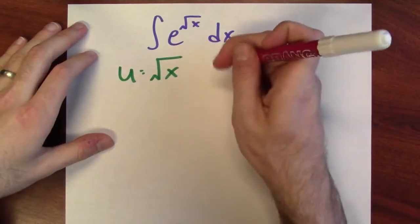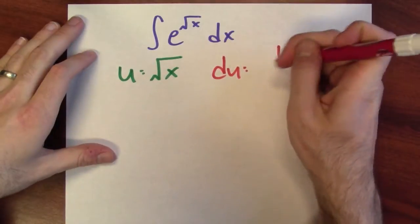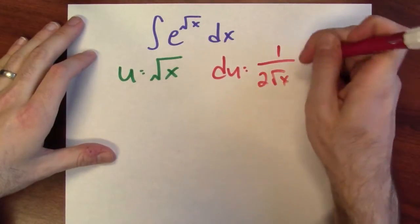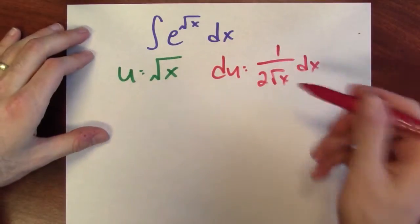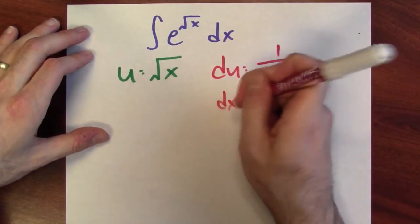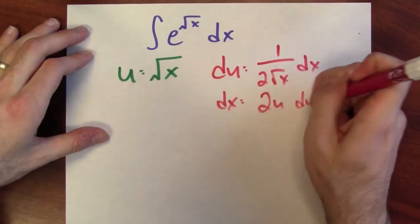In this case, if u is the square root of x, then du is 1 over 2 square roots of x dx. In other words, I could solve this and find that dx is 2u du.